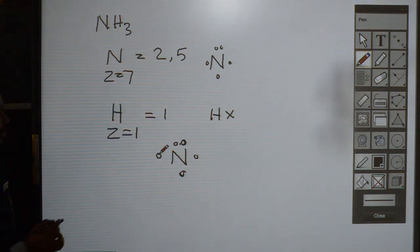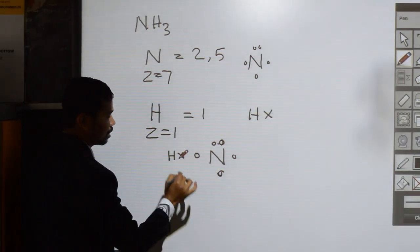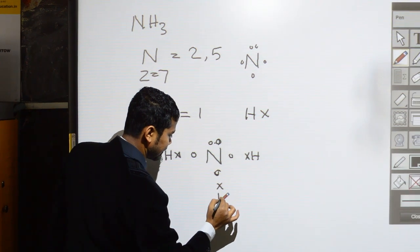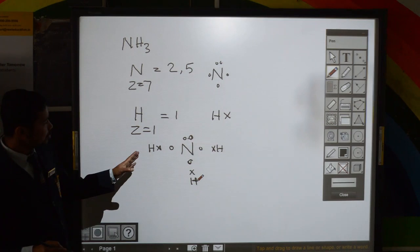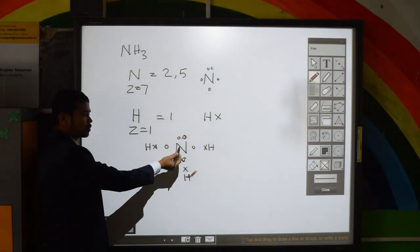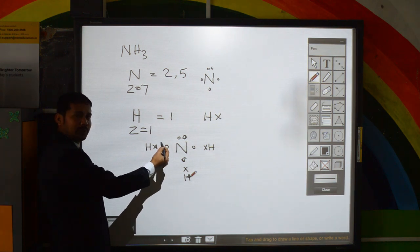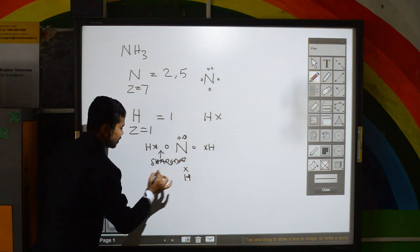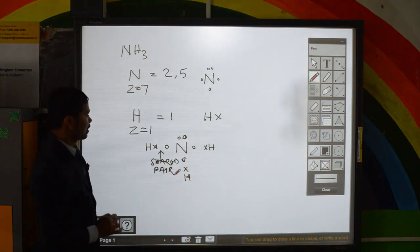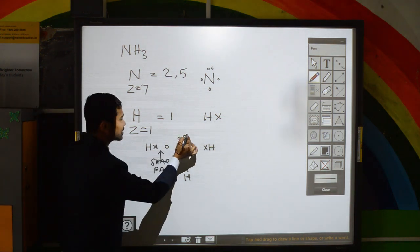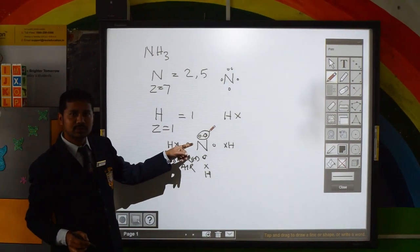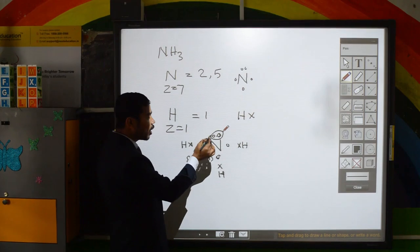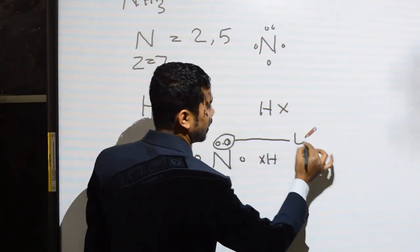Nitrogen with five valence electrons can combine with three hydrogen atoms to complete its octet. As a result, each hydrogen also completes its duplet. Each hydrogen gives one electron and nitrogen also gives one electron to form each bond — these are shared pairs. Nitrogen is then left with two electrons which are not forming a bond with anything — they are unshared.